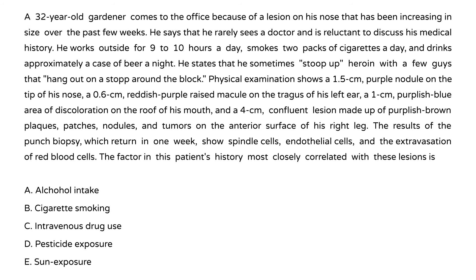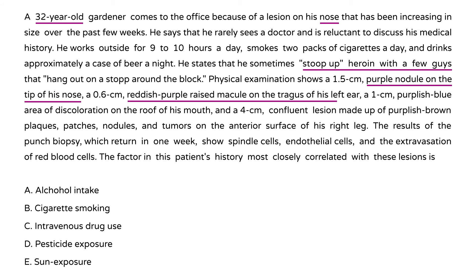A 32-year-old gardener comes to the office because of a lesion on his nose that has been increasing in size over the past few weeks. He rarely sees a doctor and is reluctant to discuss his medical history. He works outside about 10 hours a day, smokes two packs of cigarettes a day, drinks approximately a case of beer at night, and states that he sometimes shoots up heroin. Physical exam shows a 1.5 cm purple nodule on the tip of his nose, a 0.6 cm red-purple raised macule on the tragus of his left ear, a 1 cm purplish-blue area of discoloration on the roof of his mouth, and a 4 cm confluent lesion made up of purplish-brown plaques, patches, nodules, and tumors on the interior surface of his right leg.